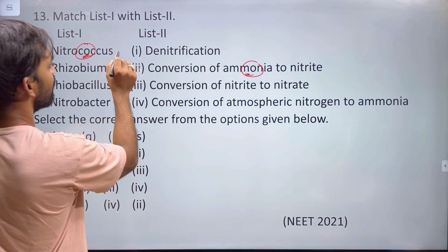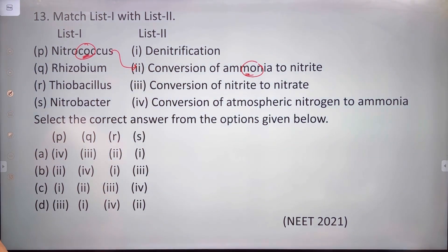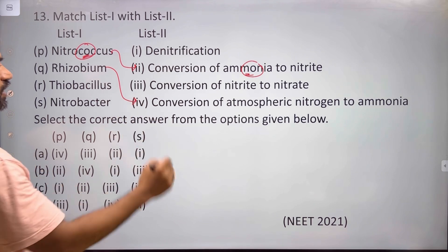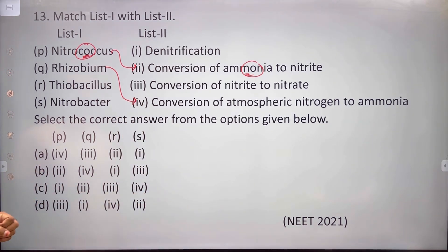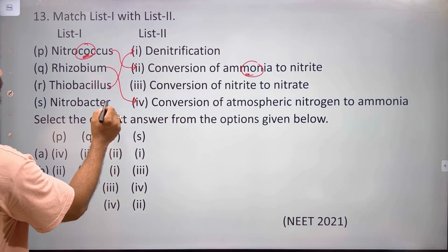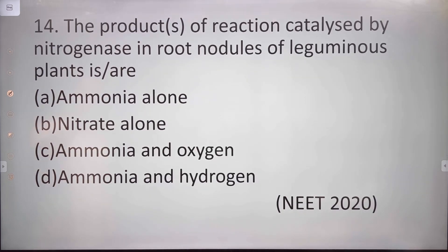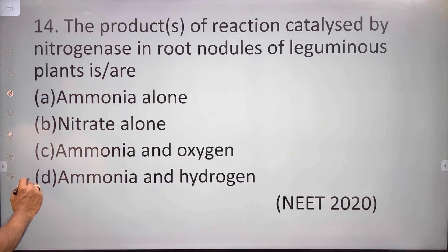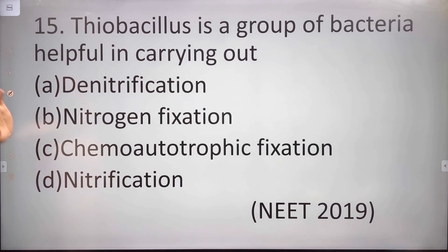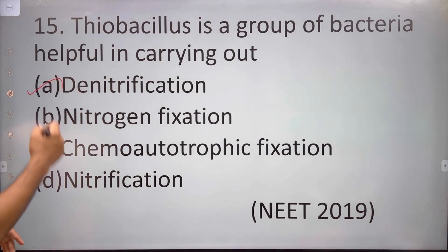Ammonia is fixed during nitrogen fixation. Thiobacillus is involved in denitrification. Nitrobacter is involved in the conversion of nitrite to nitrate. Nitrogen in the soil is converted to nitrate in root nodules. Thiobacillus is a group of bacteria helpful in carrying out denitrification.